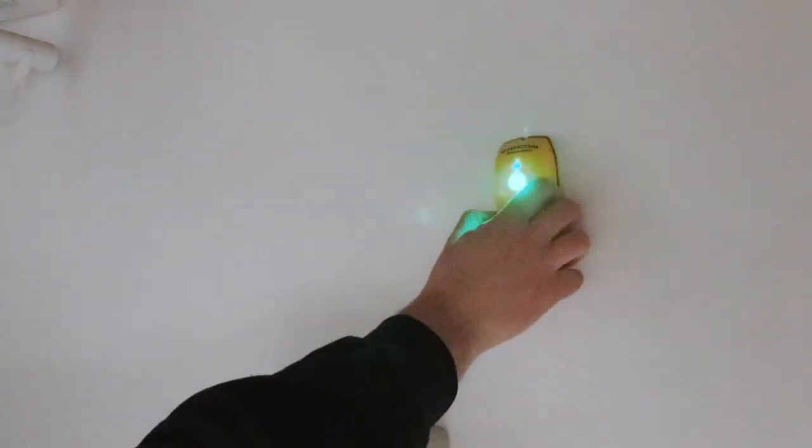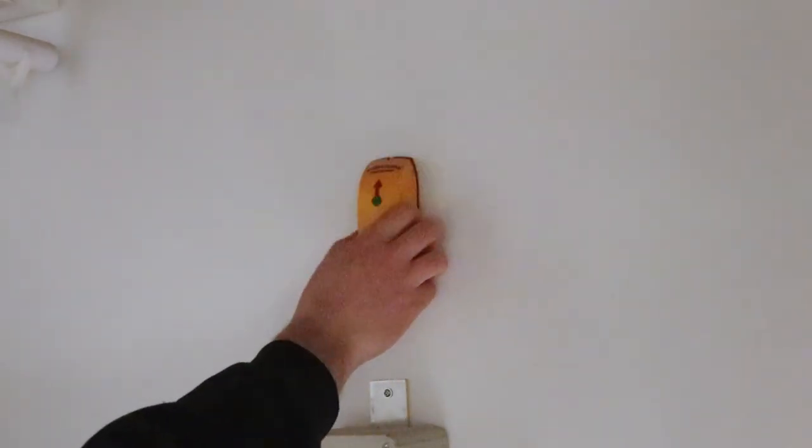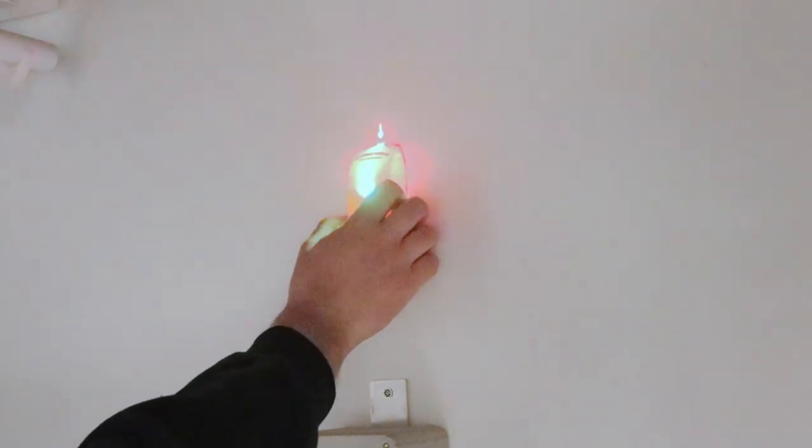The easiest way to find a stud in a drywalled wall is with a stud finder. If you don't have a stud finder, there are a couple other ways to do it.